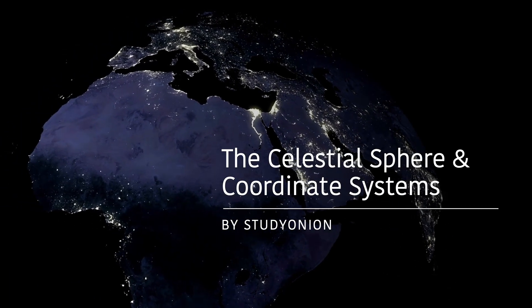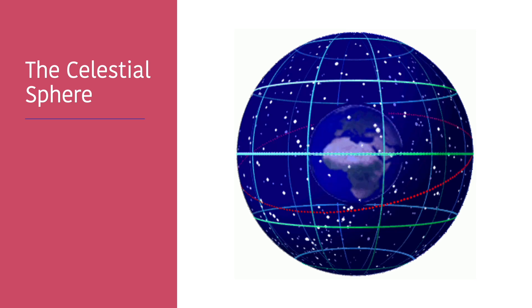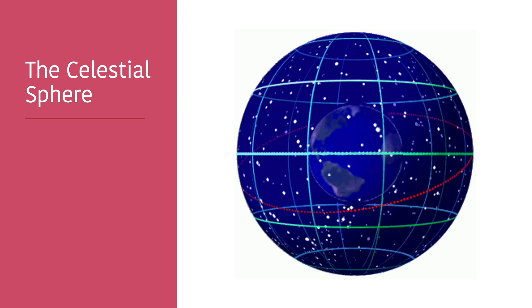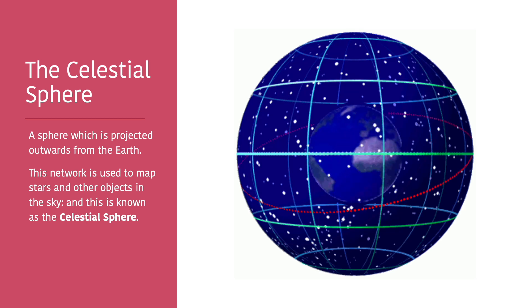In topic one we talked about the latitude and longitude system, and the equatorial coordinate system is similar. We are now going to look at a similar network of lines which we use to map stars and other celestial objects in the sky. The celestial sphere is basically just a sphere projected outwards from the earth, and we use this to map objects in the sky. While the earth is rotating, the celestial sphere is just an enlargement of the earth with lines on it to enable us to map objects.